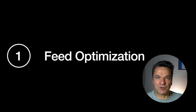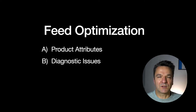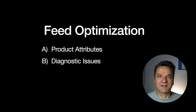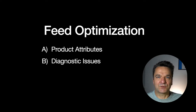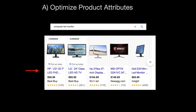Feed optimization is a large topic by itself. Today we'll look into two aspects: product attributes and diagnostic issues. Your product data feed is a file that is sent from your website to the Google Merchant Center, containing all of your product information. Think of a product feed as a massive Excel file containing information about all your products, where the rows describe each product and the columns contain all attributes of a particular product. There are dozens of attributes that you can add to describe your product — some of them are required. You need to optimize your product attributes for two entities: for Google and for the end user.